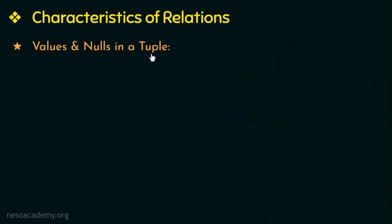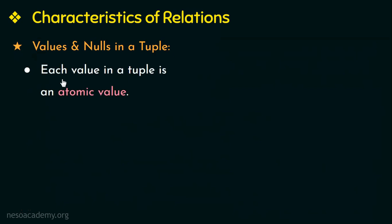The next characteristic of a relation is values and nulls in a tuple. Each value in a tuple has to be an atomic value — that is, a value that cannot be divided further. Since values must be atomic, we cannot have composite or multivalued attributes in our DBMS, and because of that it is called a flat relational model. We have learnt in the ER model what composite and multivalued attributes are.